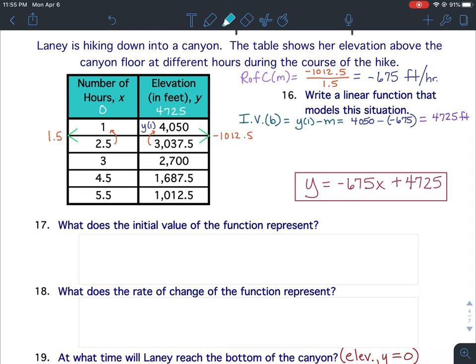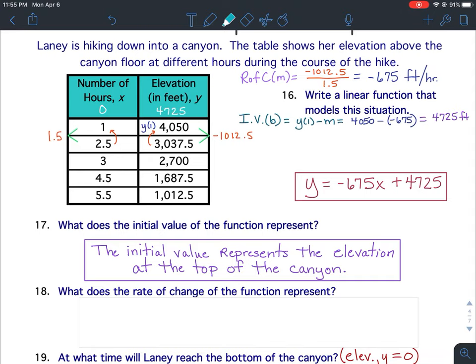Question 17. What does the initial value of the function represent? The initial value. What does that 4,725? That's the top elevation. That's the elevation at the top of the canyon.